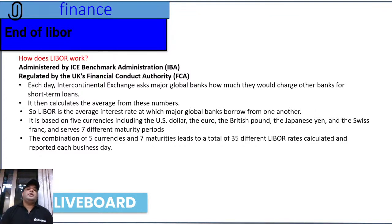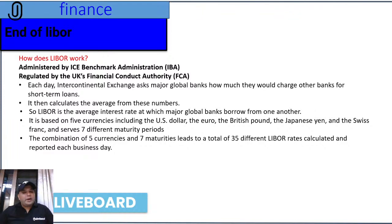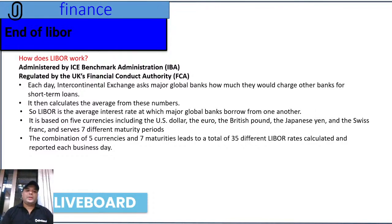LIBOR is based on five currencies: the US dollar, the euro, the British pound, the Japanese yen, and the Swiss franc. The combination of five currencies and seven maturities — ranging from overnight, one month, three months, four months, six months, nine months, to one year — leads to a total of 35 different LIBOR rates. An average is taken and calculated, reported on every business day.